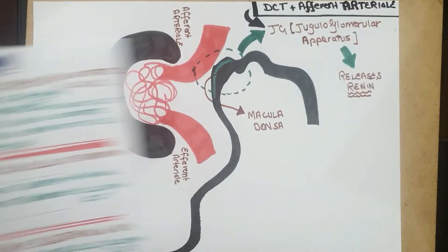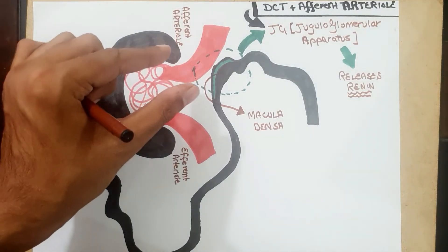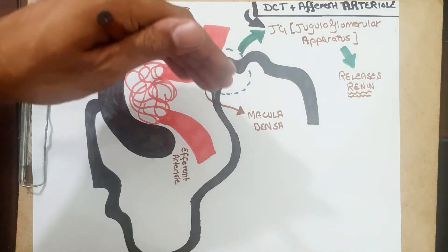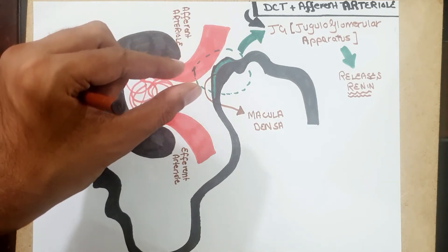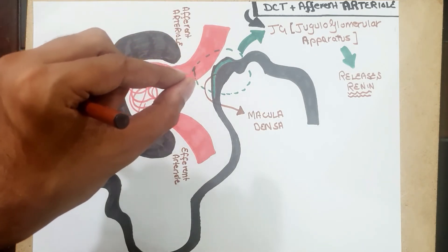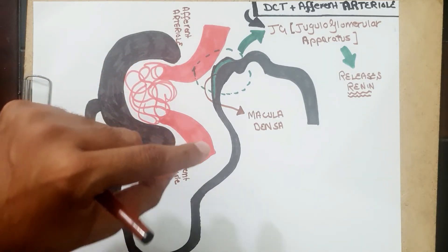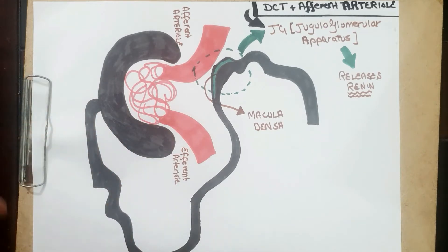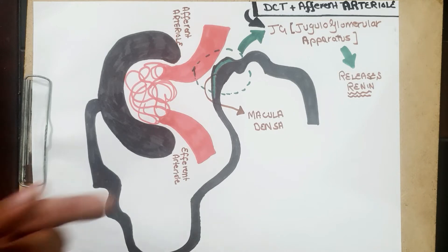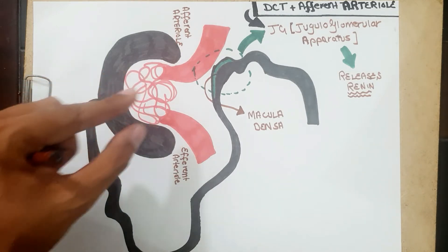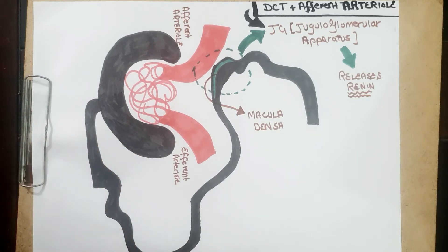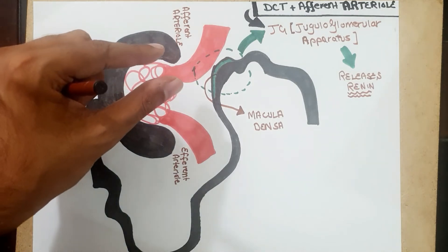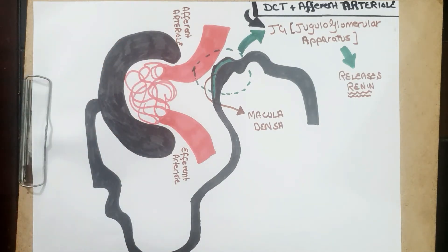If you constrict the afferent arterioles, blood flow into the glomerulus is blocked, so GFR decreases. If you constrict the efferent arterioles, it is like pinching the outflow pipe, so pressure builds up in the glomerulus and GFR increases. Therefore, constricting the efferent arterioles increases GFR, whereas constricting the afferent arterioles decreases GFR.